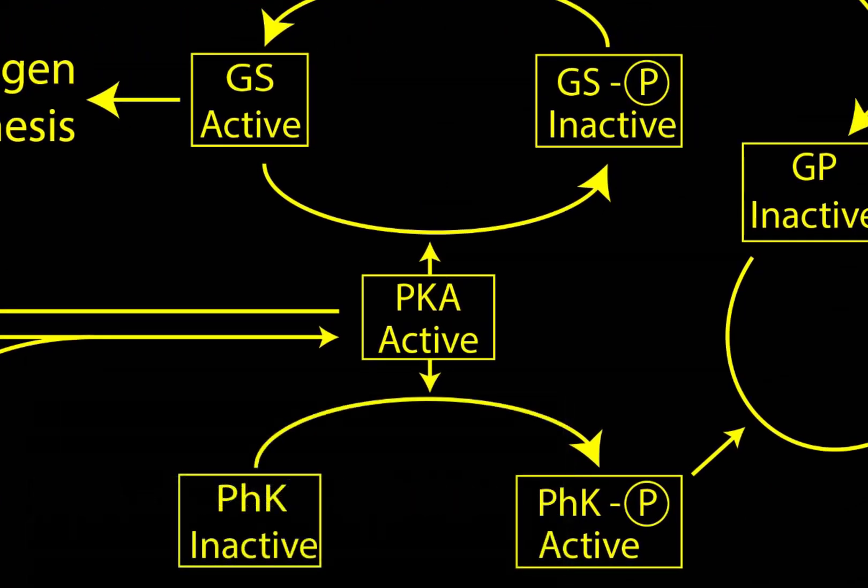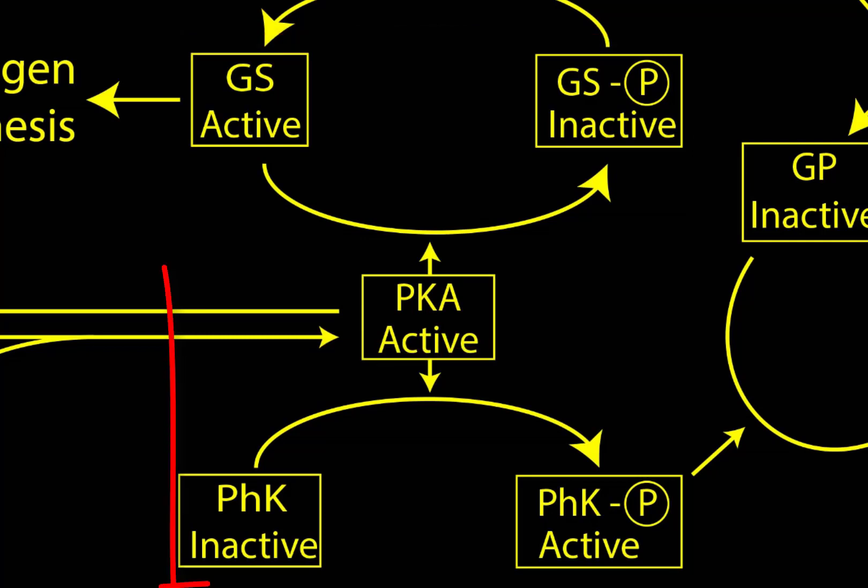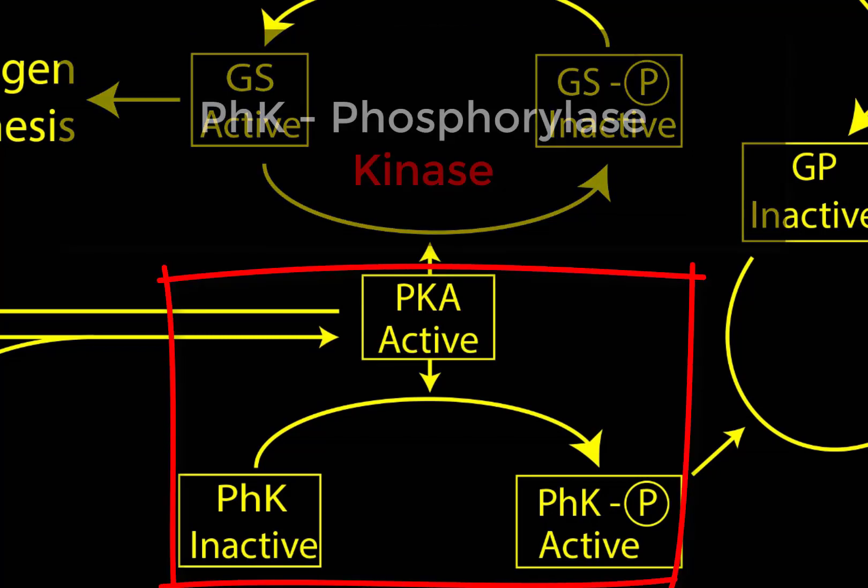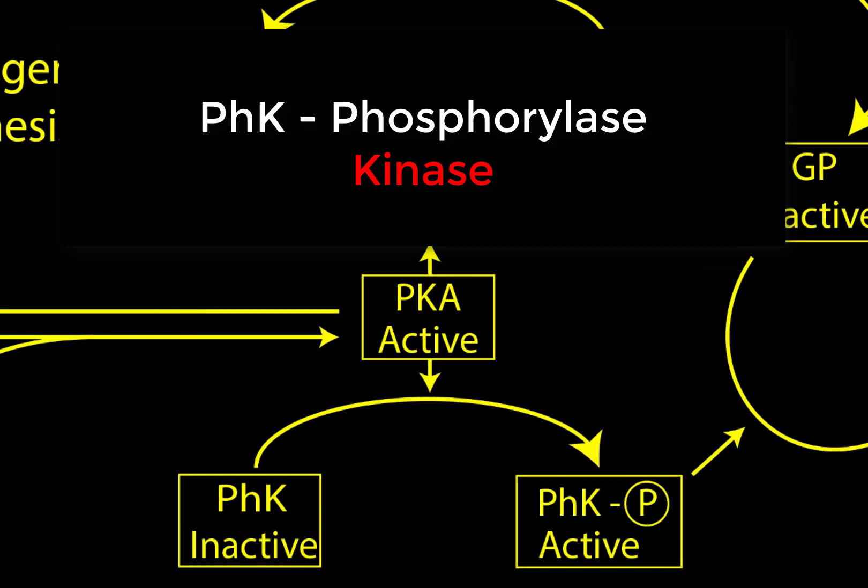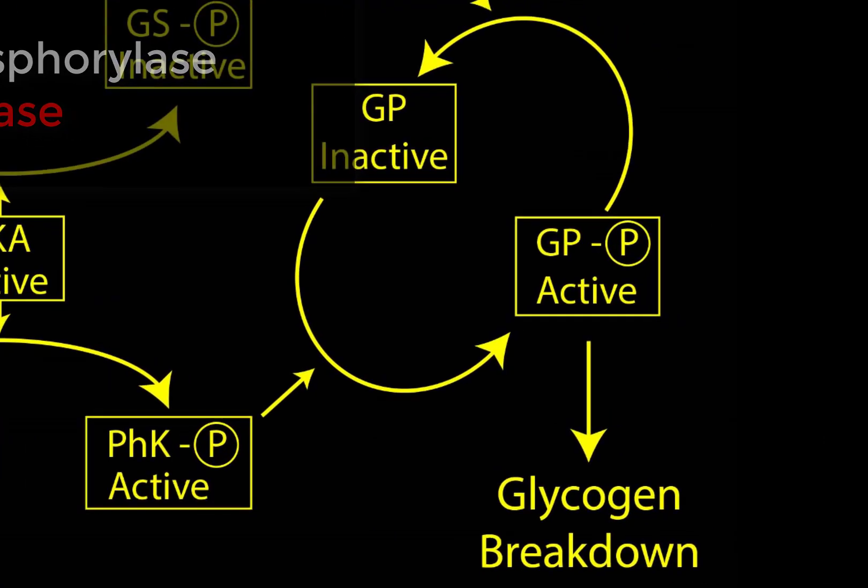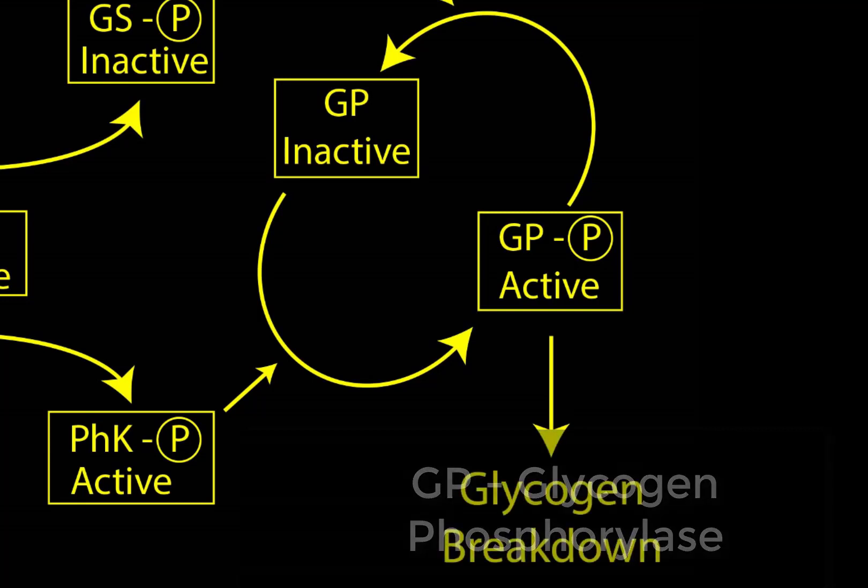Protein kinase A will phosphorylate two different enzymes in this case, either glycogen synthase or this PHK which is phosphorylase kinase. So phosphorylase kinase is a kinase that will then, in turn, put a phosphate group onto GP, which is glycogen phosphorylase. Glycogen phosphorylase is the enzyme we've seen that will catalyze the breakdown of glycogen.